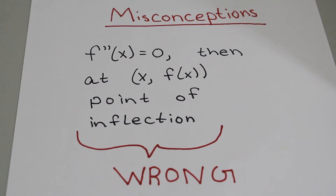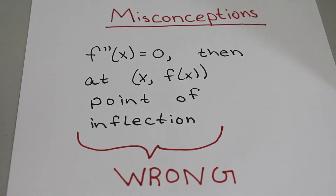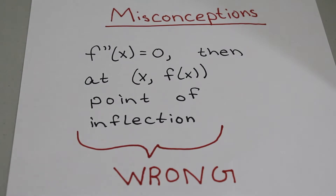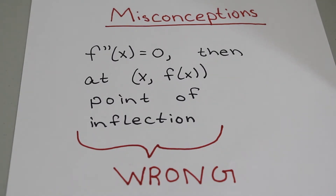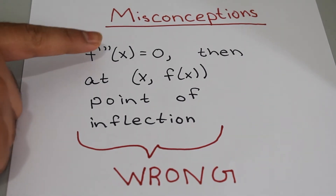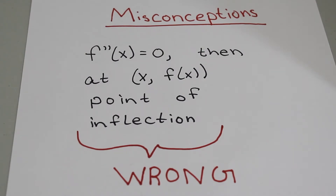First on the list involves points of inflection. The misconception is that if f'' equals 0, then f must have a point of inflection there. This is wrong — a point of inflection can occur where f'' is undefined or equals 0, but you must show that f'' is changing signs at that x value.